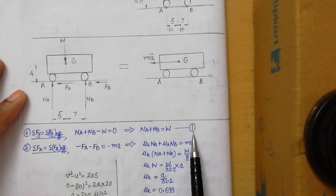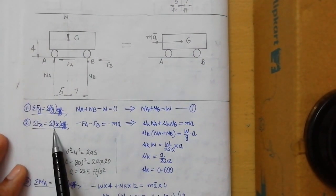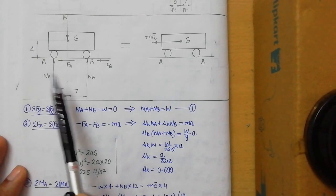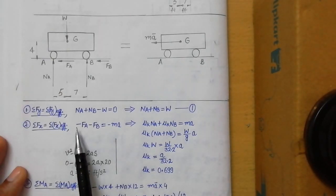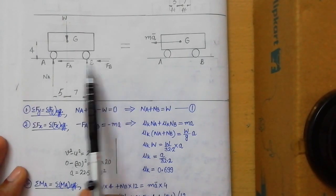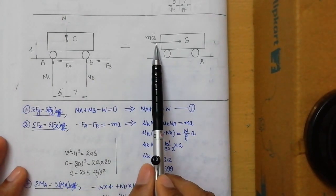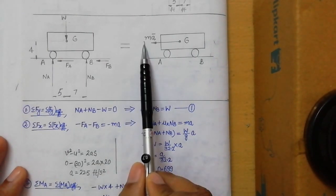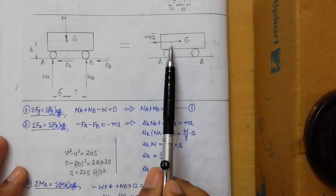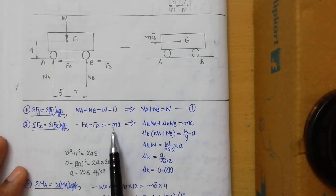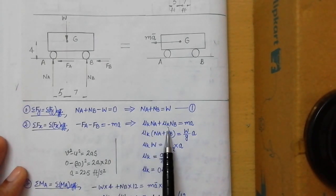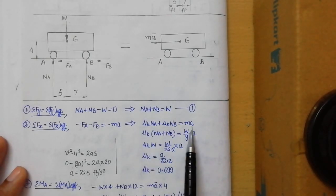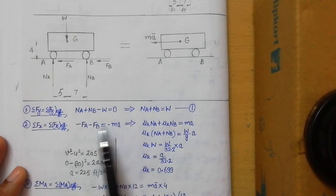Applying ΣFx = ΣFx(effective): the x-direction forces are FA and FB, both acting towards the left (negative). These two forces produce the retardation, so −FA − FB = −ma. Since FA = μk·NA and FB = μk·NB (using the kinetic friction coefficient because the truck is in motion), we get μk(NA + NB) = ma. The negative signs cancel from both sides.